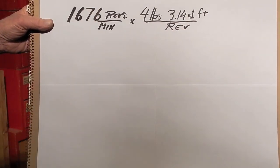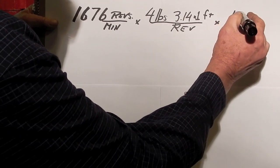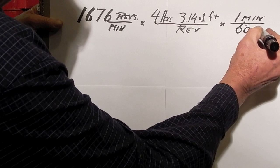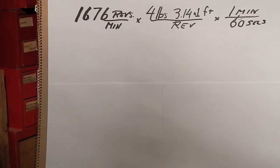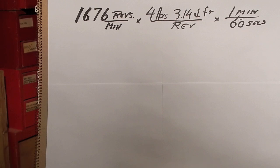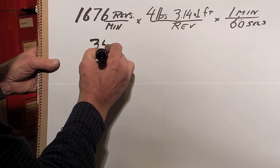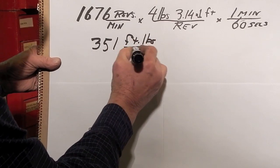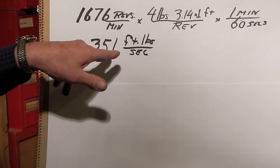Because we're trying to get it down to foot-pounds per second, we have to also multiply times one minute, actually divide by 60 seconds. If we do the arithmetic for that, we come up with 351 foot-pounds per second.